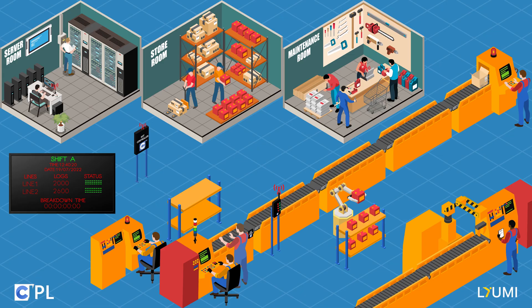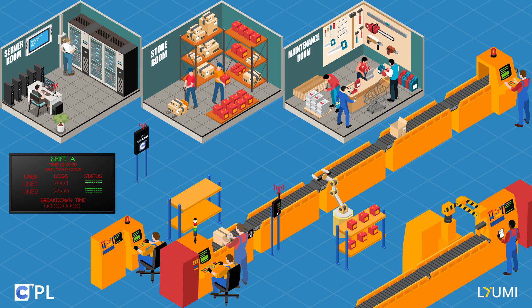Notably, each box is counted and tracked by a sensor that sends signals to the server, which in turn displays the box count on an LED display board. As we step inside the factory, you'll notice the busy production line with workers packaging boxes on the conveyor belt. This is where the Undawn system comes into play.